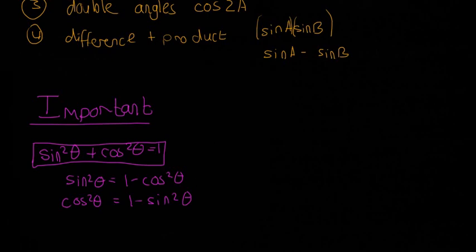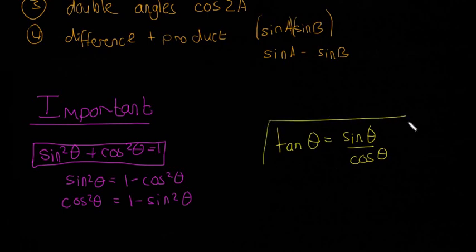Another one that's really useful is tan θ = sin θ / cos θ. So if you ever see sin θ over cos θ, you can break that up into tan θ and vice versa. That's a really important one that I don't think is actually in the formula tables book.